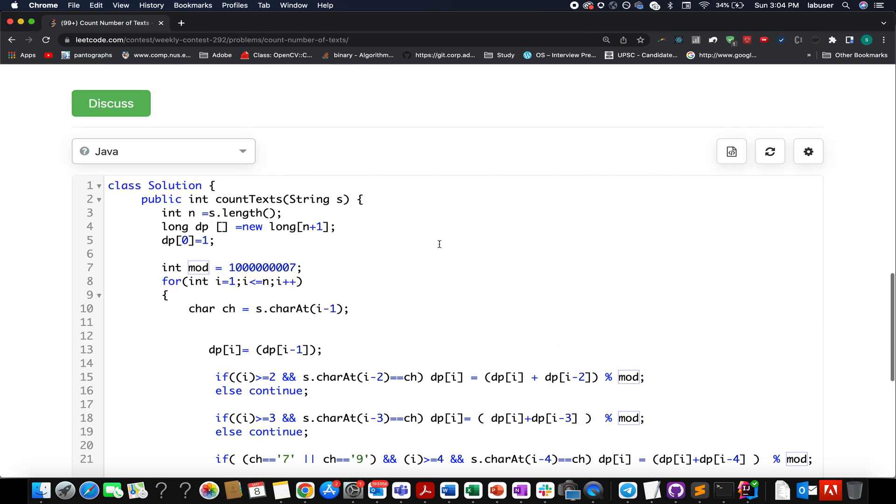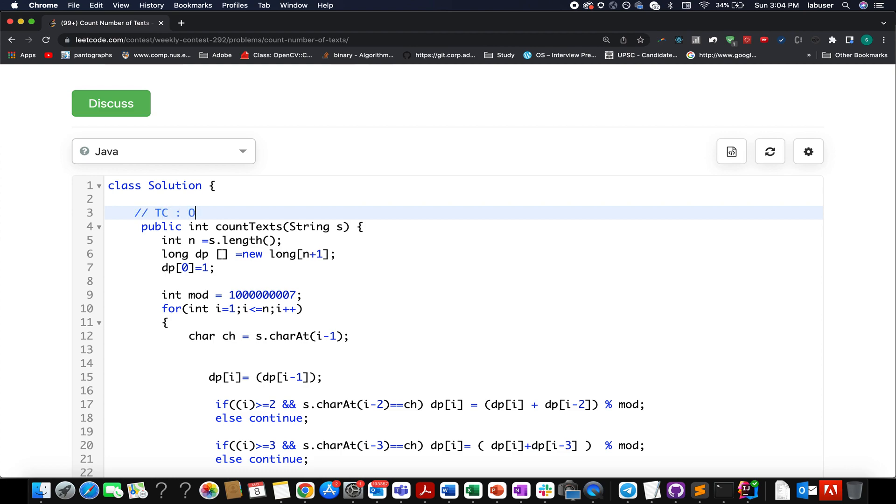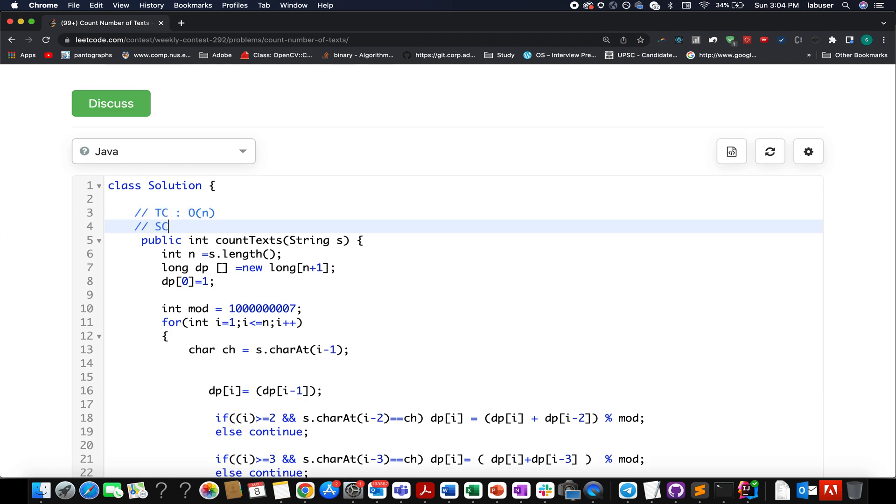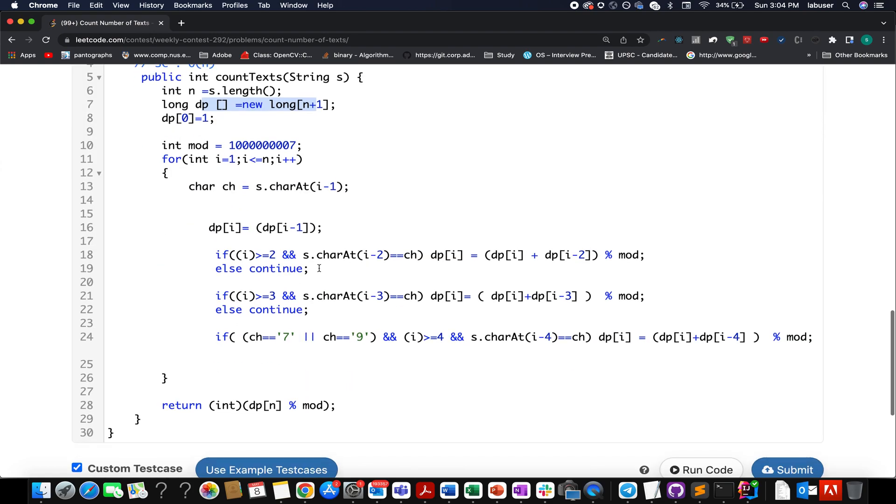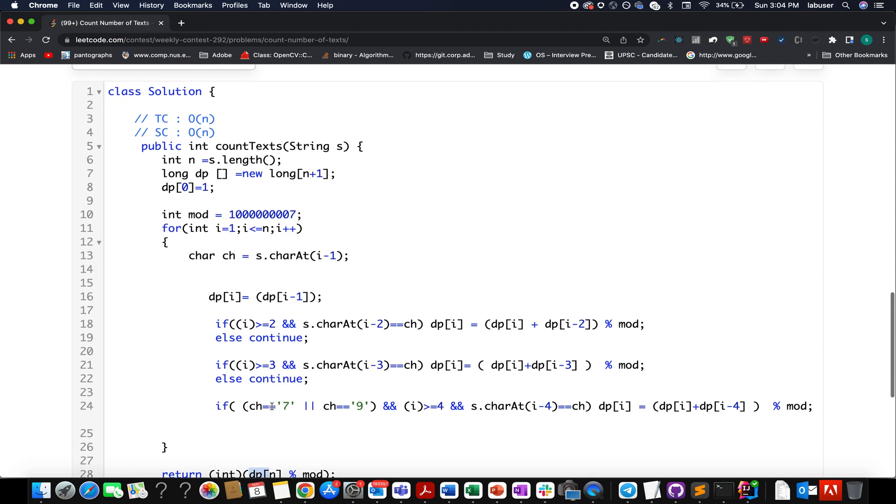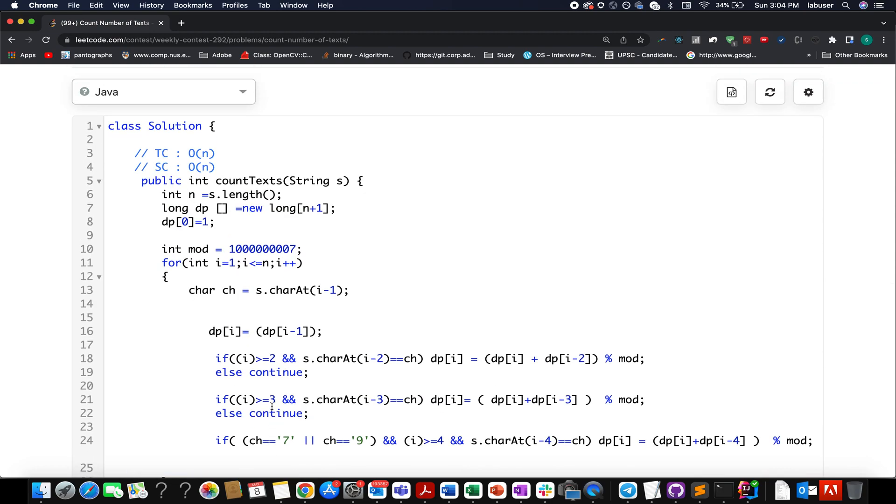The time complexity is order of n, where n is the length of the string. Space complexity is also order of n because you have a DP array created. With this, let's conclude the question. I hope you enjoyed it. If you did, please don't forget to like, share and subscribe to the channel. Thanks for viewing, have a great day and stay tuned for more updates from Coding Decoded.